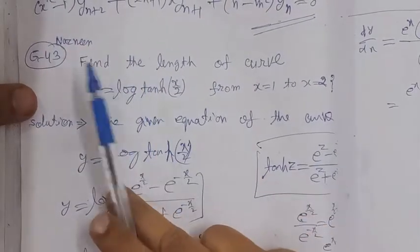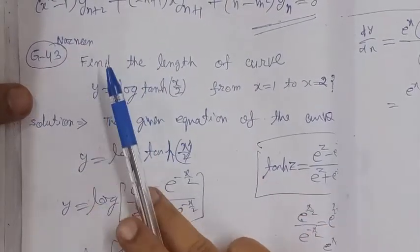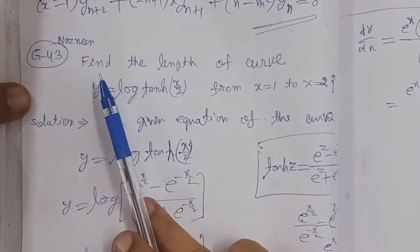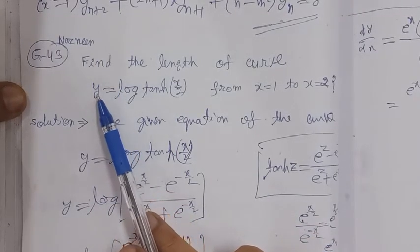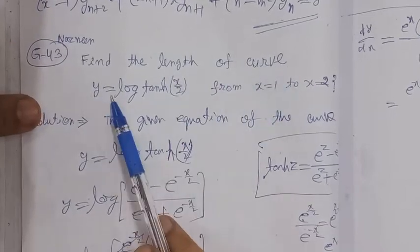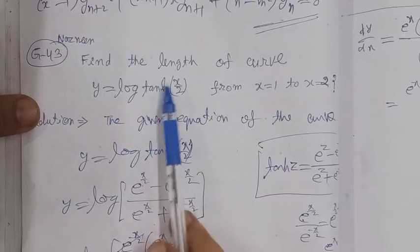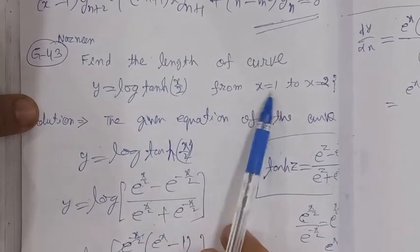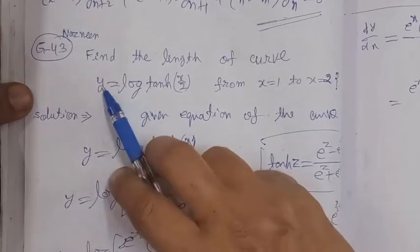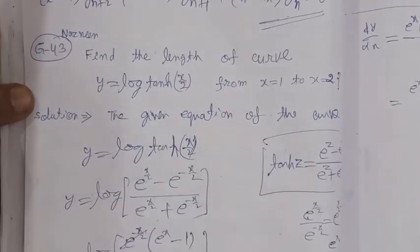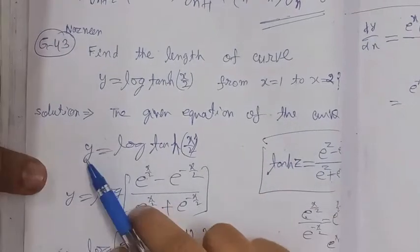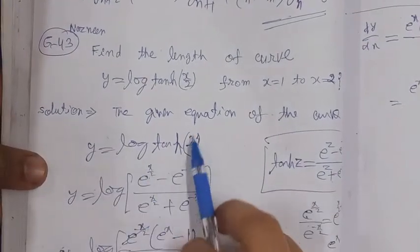Bismillahirrahmanirrahim. On the demand of students, a problem on rectification in integral calculus — meaning the length of the curve. Find the length of the curve y = log(tanh(x/2)) from x = 1 to x = 2. First, this is the equation of the given curve: y = log(tanh(x/2)).